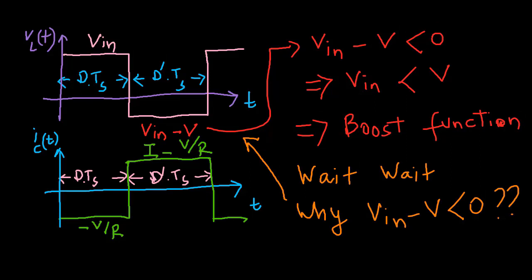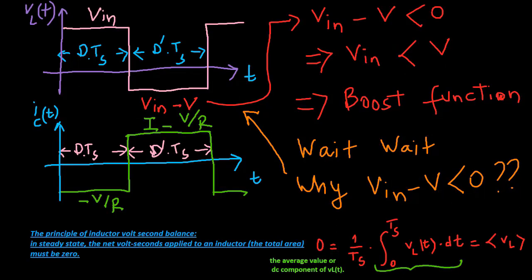During the first sub-interval, V L is equal to the DC input voltage V in, and positive volt seconds are applied to the inductor. Since, in steady state, the total volt seconds applied over one switching period must be zero, negative volt seconds must be applied during the second sub-interval.